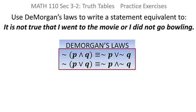Remember, DeMorgan's Laws tell us how to take the negation of an and or. This is an or, so we're going to end up using this version of DeMorgan's Law.